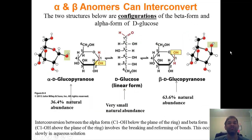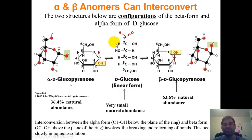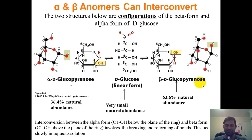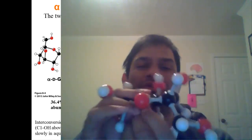Focusing on glucose: 36.4% of glucose is in the alpha form, where the OH attached to the anomeric carbon is below the ring, and a vast majority — about 64% — is the beta form, where it is above the plane. A very small amount, about 1%, is in the linear form. That 1% linear form, when it interconverts, will be very important as we see in the next lecture.